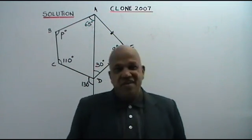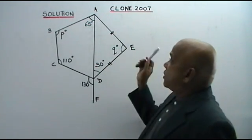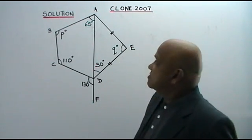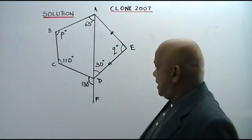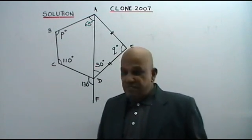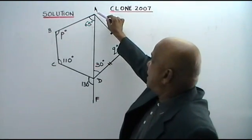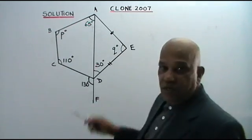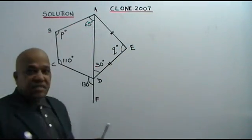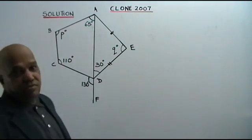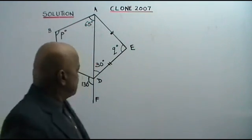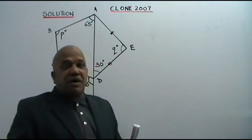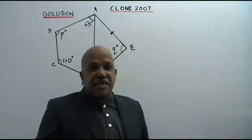Here I have for you a clone question based on the year 2007 Paper 1 PMR. You are given that ADF is a straight line, and triangle ADE is isosceles — isosceles means these two sides are equal. You are asked to find the value of P plus Q. Now, A, B, C, D is a quadrilateral, so the sum of all interior angles is 360 degrees.